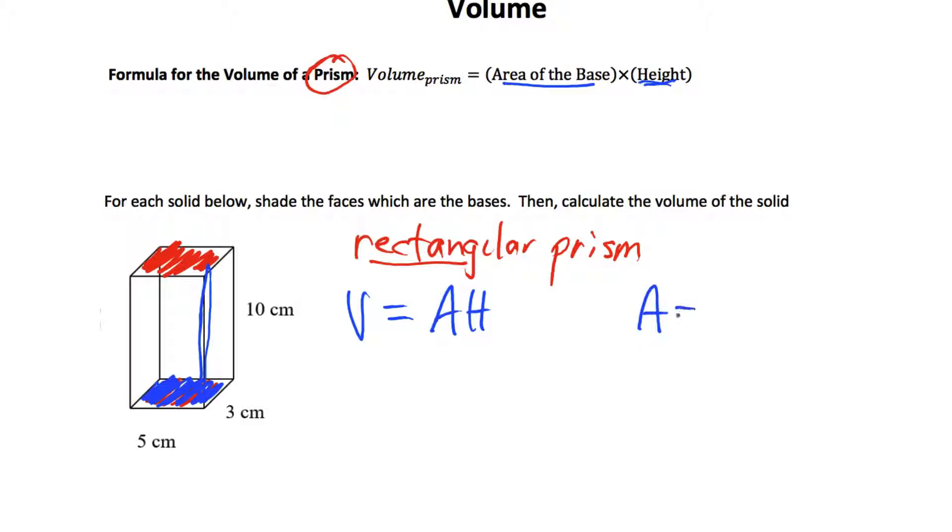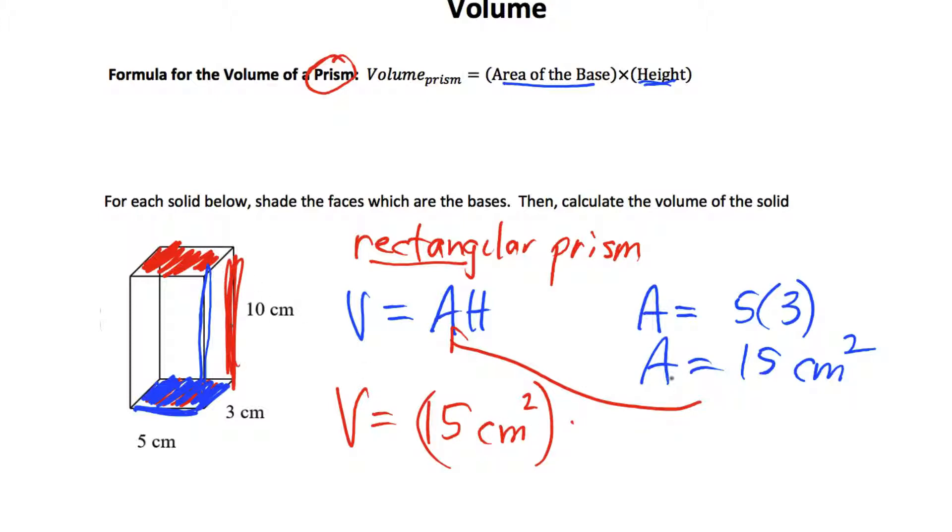Let's do the area of the base over here on the side. That would be my five by three. It's a rectangle. So that area is 15 centimeters squared. And then if I finish that off into my volume formula, the volume is 15 centimeters squared multiplied by a height, the length from the bottom base to the top, 10 centimeters. And my volume is 15 times 10, 150 centimeters cubed.